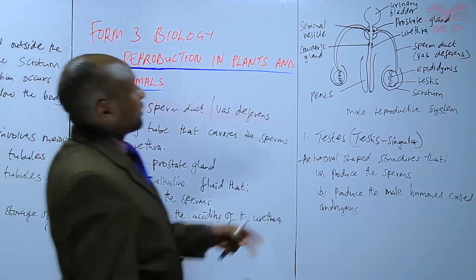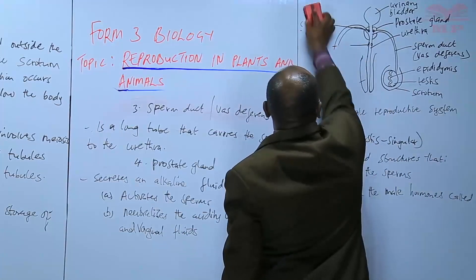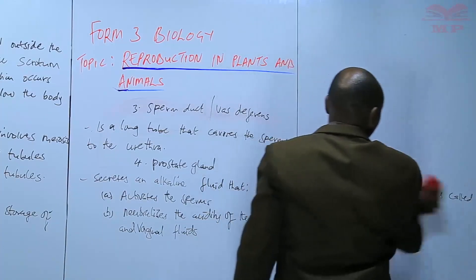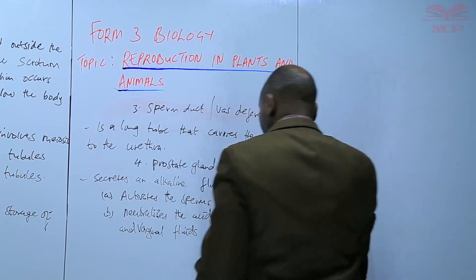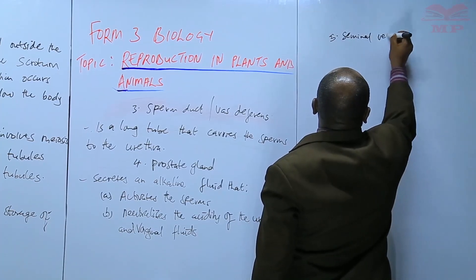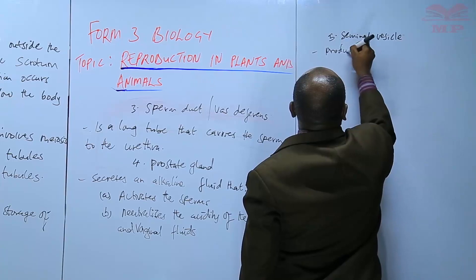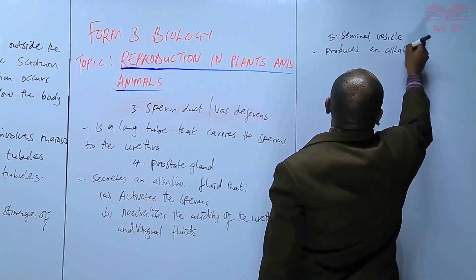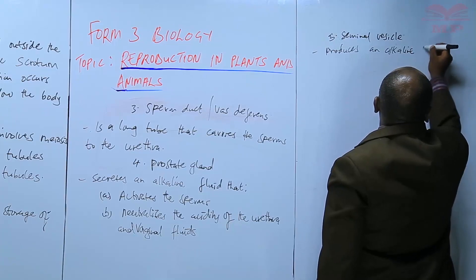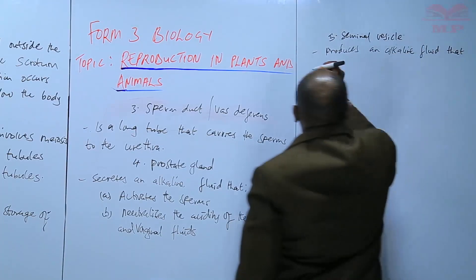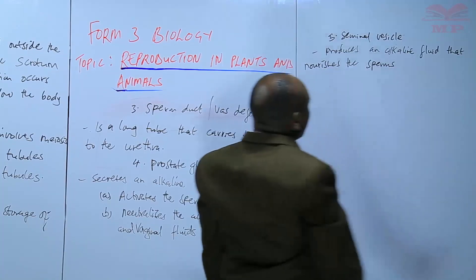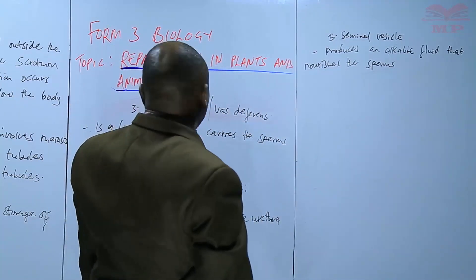Then we have the seminal vesicle, which is another gland. The seminal vesicle also produces an alkaline fluid that nourishes the sperms, providing nourishment to them.